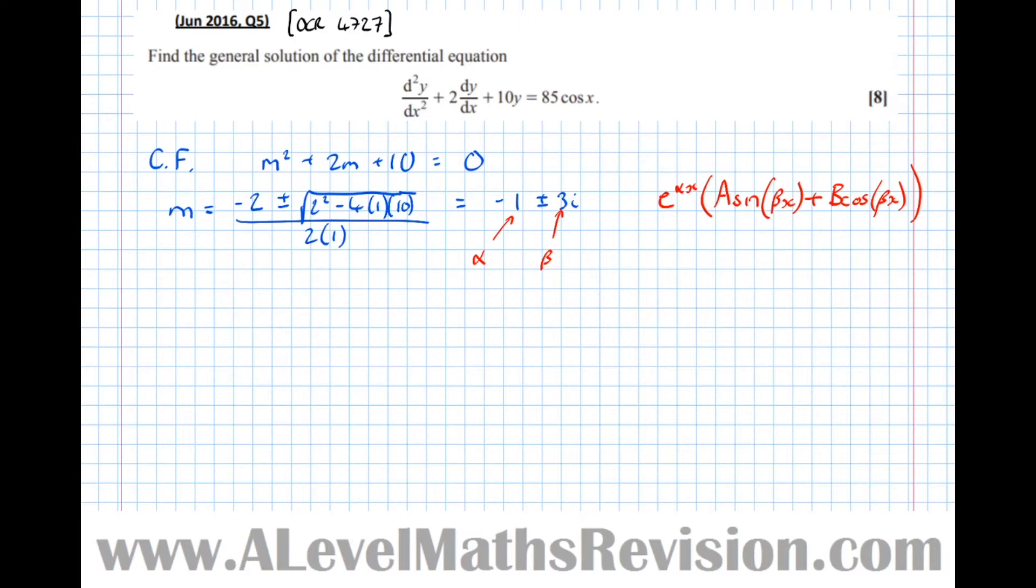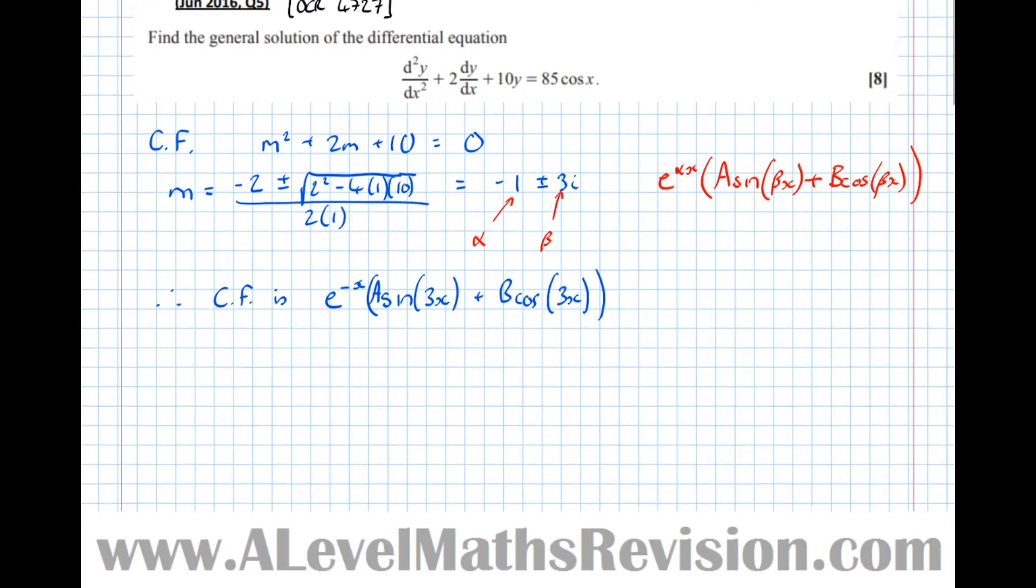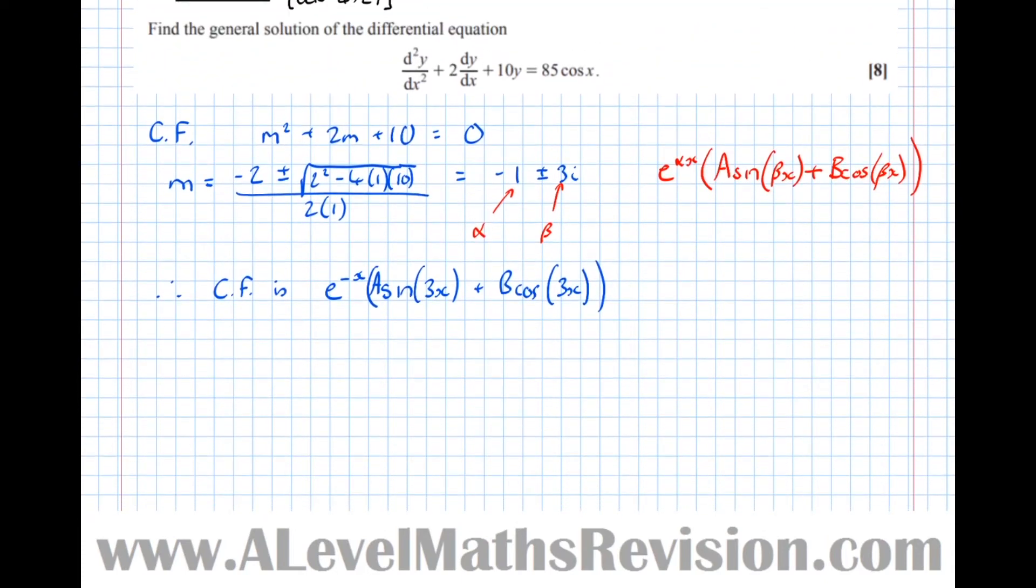Otherwise, let's keep going. So therefore, the complementary function is e to the minus x. And then we've got sine of 3x times the constant a plus b cos of 3x, where a and b can be complex numbers. So now that we've got the complementary function, let's now go ahead and look at the particular integral.